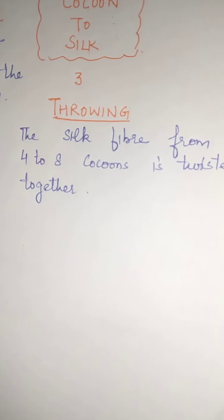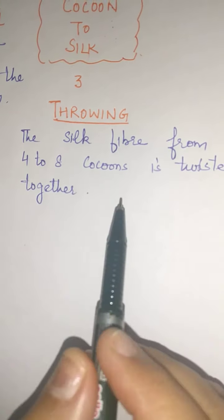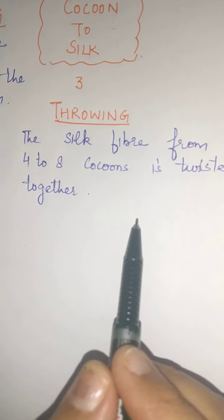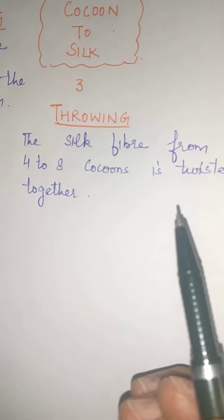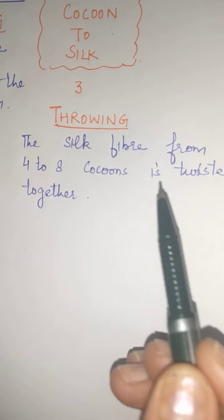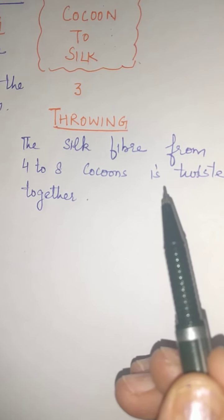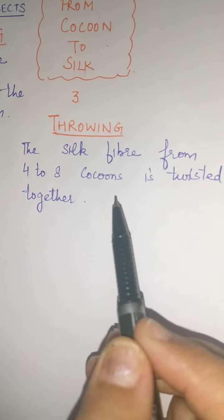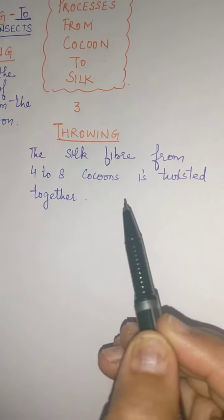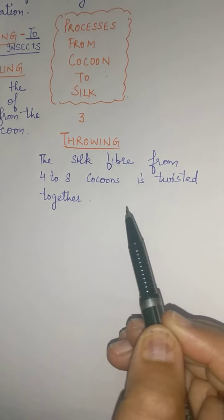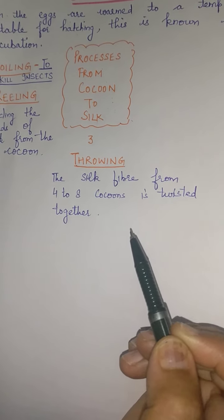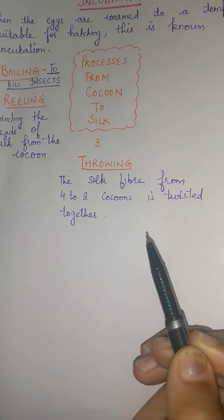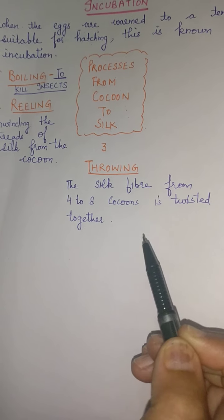The resulting thread is called raw silk, which is woven into silk cloth. After that, the silk is dyed for making colorful fabrics.